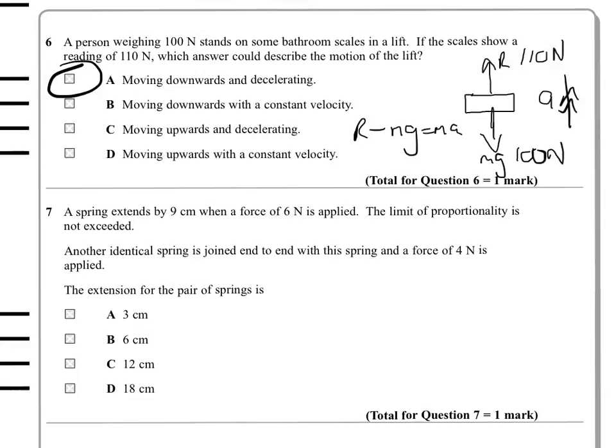Question seven. A spring extends by 9 centimetres when a force of 6 newtons is applied. The limit of proportionality is not exceeded. OK. Now, what this information tells us, if we look at these two numbers, is that 1 newton corresponds to 1.5 centimetres of extension for one of these springs.